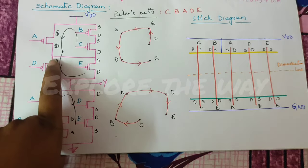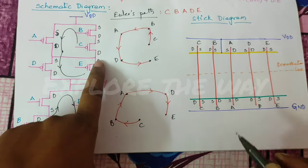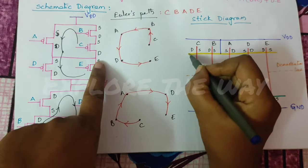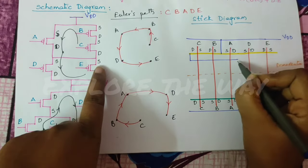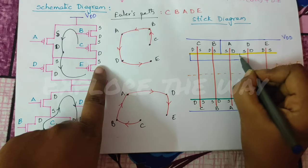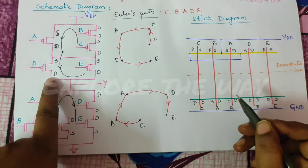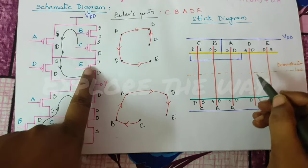Next, drain of A, D are connected together. Drain of A, D. And, sources of D, E are connected.